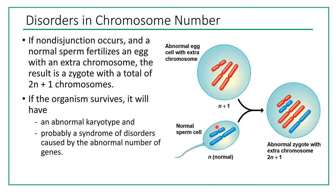Is it possible that the sperm is abnormal? That is possible too, but more often the problem happens with an egg. With millions of sperms produced, even if some are abnormal the chances are still very high that a normal sperm fertilizes an egg. Females only produce one or two eggs every month, so the chances are higher that an abnormal egg is involved. If a normal sperm fertilizes an egg at n minus 1, the zygote will have 2n minus 1 ploidy.